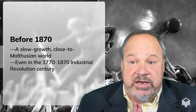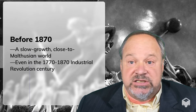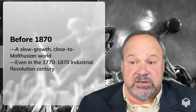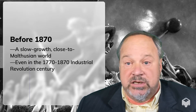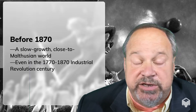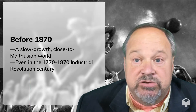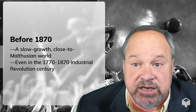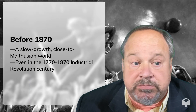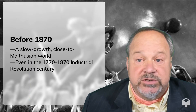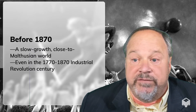Before 1870, we had a slow-growth, close-to-Malthusian world. People advanced in the technologies they used to manipulate nature and organize themselves, but these advancements were slow. Every improvement in human living standards caused a disturbance in the ecological balance between population and resources — better technology meant population grew until resource scarcity pushed it back close to stable, which means humanity was very poor. Even in the 1770–1870 Industrial Revolution century, when technology began to gain a few steps on fecundity, it only managed to gain very few steps.